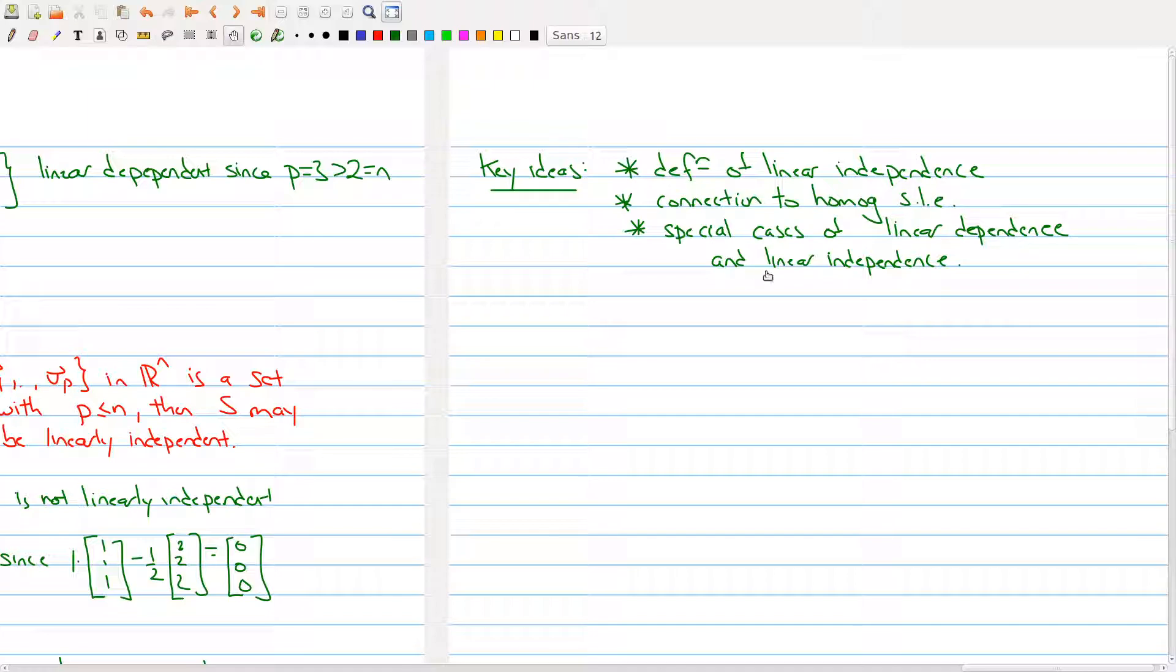And then you should know the special cases of linear dependence and independence. That is, if you have a small set of vectors or if you have too many vectors. We covered both of these cases. So, that's it for lecture 7. I hope you enjoyed it and I'll be back with lecture 8 next time. See you then.